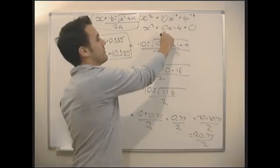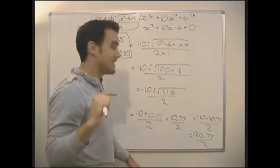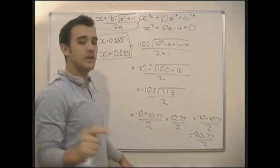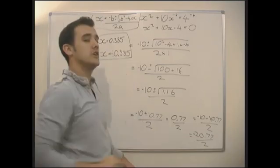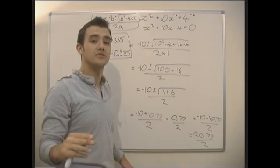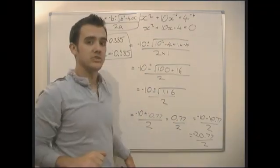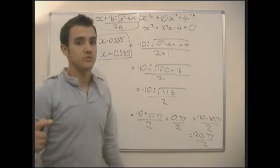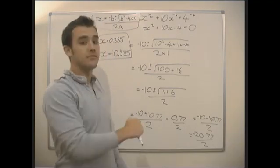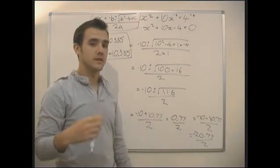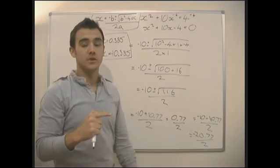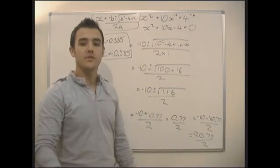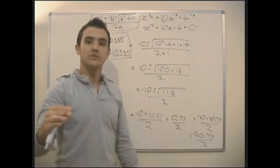Always check if you can factorise first, because factorising is easier and quicker. Generally, if the question asks you to give the answer to a certain number of decimal places, you can't factorise — but always check first. That's basically the most advanced algebra we're going to do. Practice solving quadratic equations, deciding whether you can factorise or not, and then we'll finish up the graph topics.